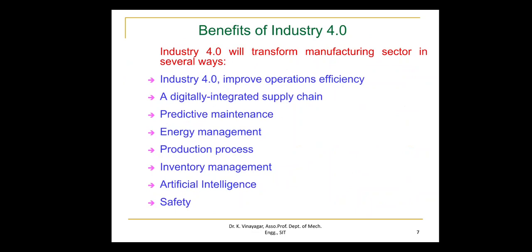Predictive maintenance can prevent breakdowns and reduce routine maintenance costs. Recommendations can be sent to the operations, maintenance, and IT departments to address a breakdown even before it occurs. Operating costs and capital costs can be reduced by facilitating proactive servicing. Preventive maintenance using IoT can reduce maintenance costs of factory equipment by 10 to 40% and bring down equipment downtime by up to 50%.